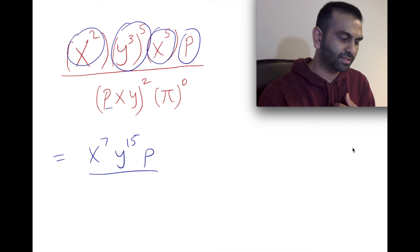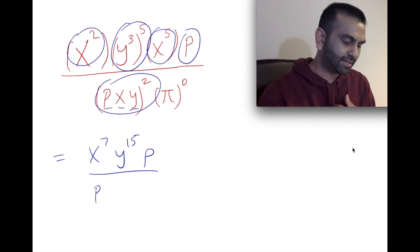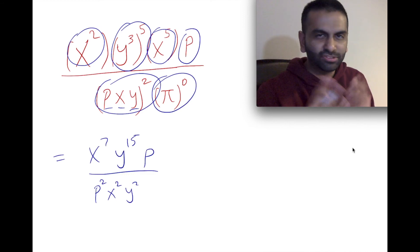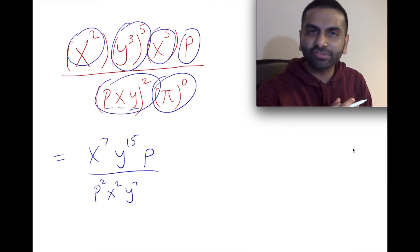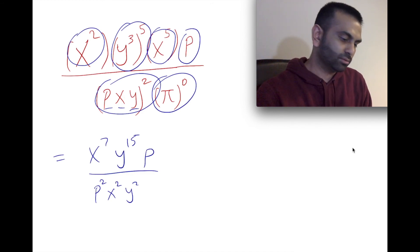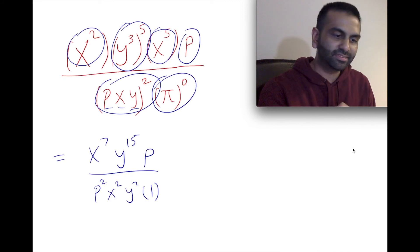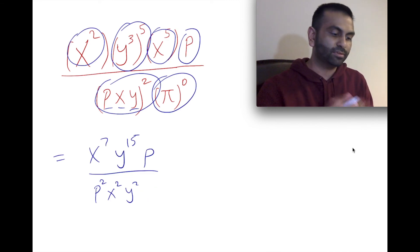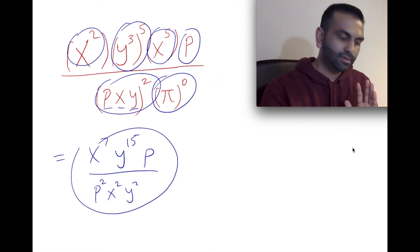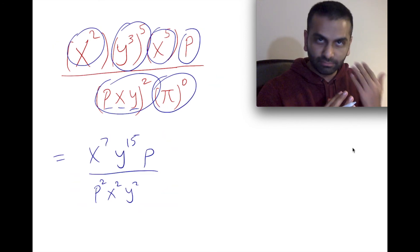With that rule in mind, the squared applies to all three terms inside, giving p squared, x squared, and y squared. Then we have pi to the power of zero — anything to the power of zero is always equal to one, so pi to the zero is just one, and we don't need to write times one.